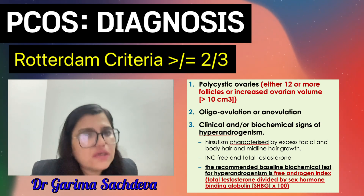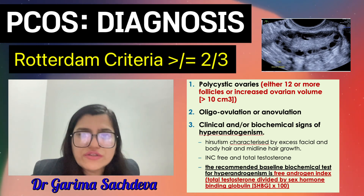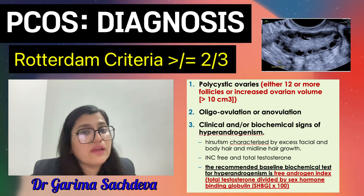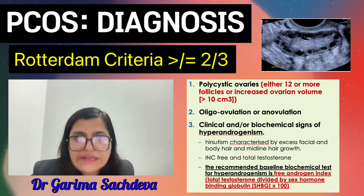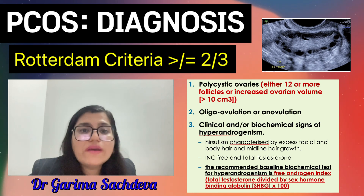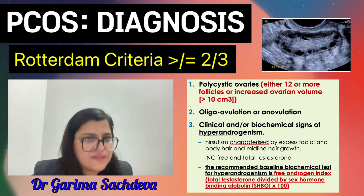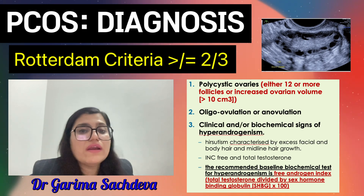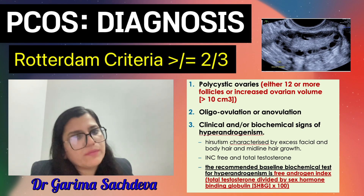The third parameter is polycystic ovarian morphology on ultrasound. If you have an older machine with resolution less than 8 megahertz, at least 12 follicles per ovary are required; with a better resolution machine, at least 20 follicles per ovary are needed to call it PCOS. Additionally, if the volume of the ovary is more than or equal to 10 cubic centimeters, or if there is peripheral distribution of the follicles, this defines polycystic ovarian morphology.